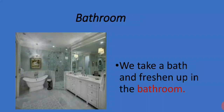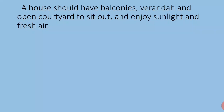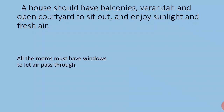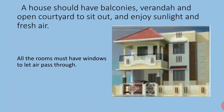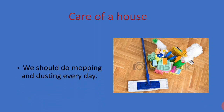Bathroom: we take a bath and freshen up in the bathroom. Garage: in some houses, we keep our vehicles like motorbike, car, etc. in the garage. A house should have balconies, veranda, and open courtyard to sit out and enjoy sunlight and fresh air. All rooms must have windows to let air pass through.